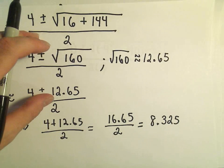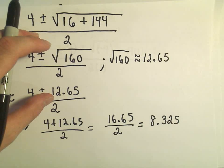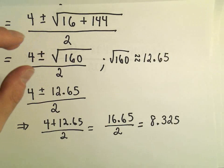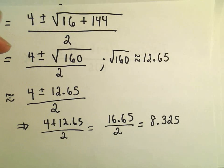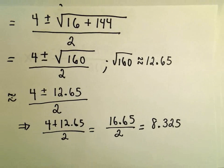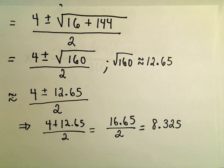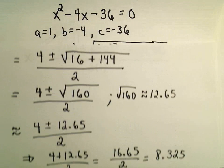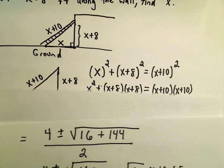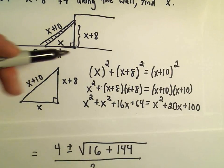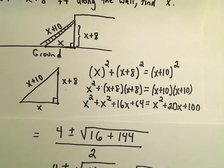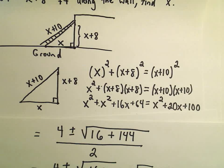That looks good. I'm going to check it just to make sure — okay, that makes sense. So it's kind of tedious, but you really need to be careful on these problems. You need to carefully distribute everything out, collect your like terms, make it into a nice quadratic, and then just go from there.